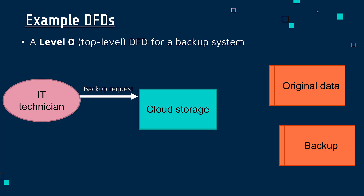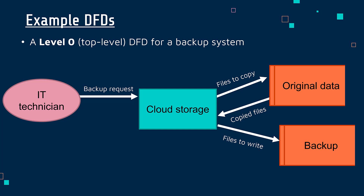The technician might request a backup from the cloud storage provider. The cloud storage provider might specify what files to copy. It might interact with that database and ask it for the number of files. That database might give back the copied files. Then the cloud storage might ask the backup database to write these files. And finally, it might respond back to the technician confirming all of this is done. When you see the final diagram it looks a tiny bit confusing, but you can see how the data is moving around. It's not a bad idea to add numbers — one, two, three, four, five — if you feel it's going to be hard to interpret.